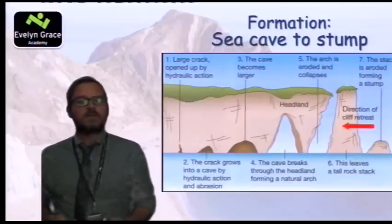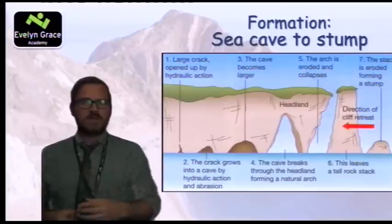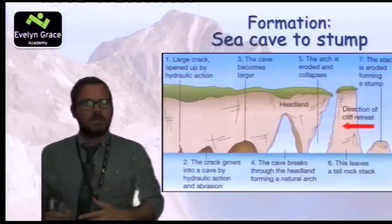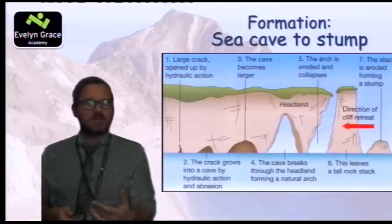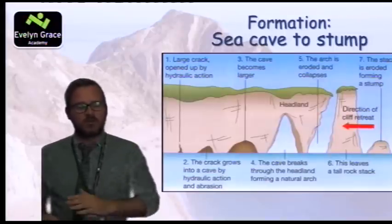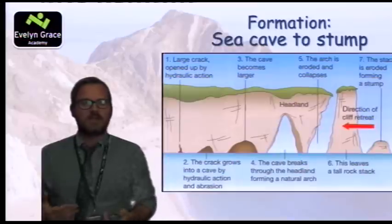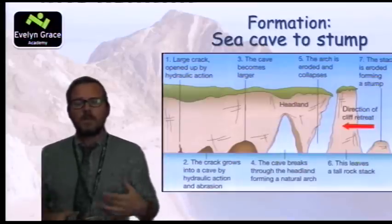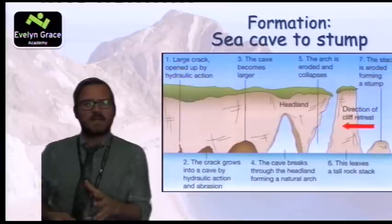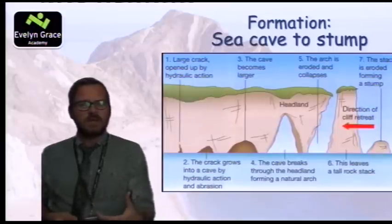Eventually the waves break through the headland and form a natural arch. I wouldn't like to be standing on top of the arch, because eventually it is going to collapse — the wave action creates an undercut at the edge of the cliff and it will fall down. You can see the direction of cliff retreat in the diagram.